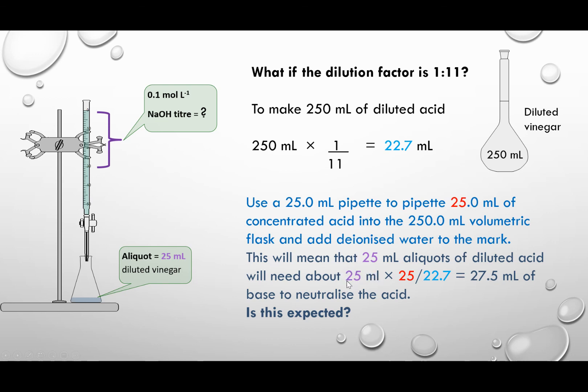the amount we use divided by the amount we should have used times the aliquot value. So in this case, in our lab, we didn't have 20 mL pipettes, so we use 25 mL. And so we come up with an expected titer value of 27.5 of the sodium hydroxide as needed to neutralize 25 mL of base.